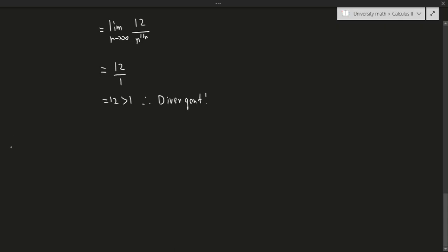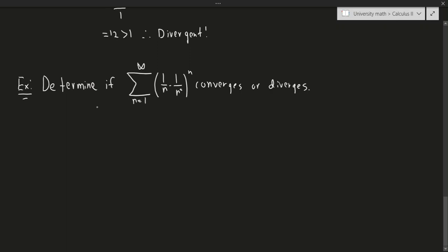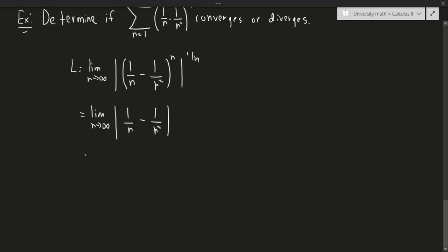Let's do one more example. We want to check if the series with terms 1 over n minus 1 over n squared, all to the power of n, converges or diverges. L equals the limit as n goes to infinity of the absolute value of 1 over n minus 1 over n squared to the n, raised to 1 over n. The powers cancel, giving the limit of 1 over n minus 1 over n squared. Plugging in infinity gives 0 minus 0, which is 0, and 0 is less than 1. So this series is convergent.